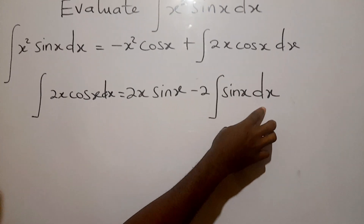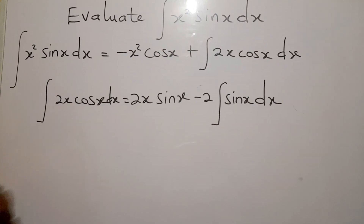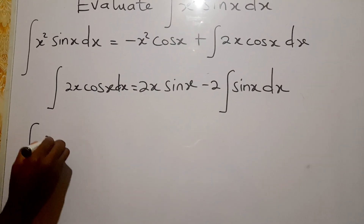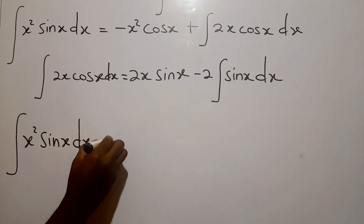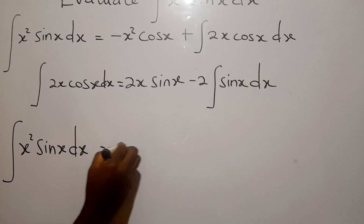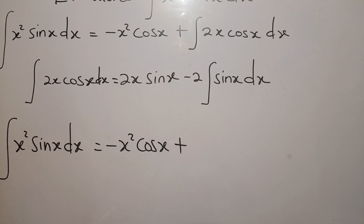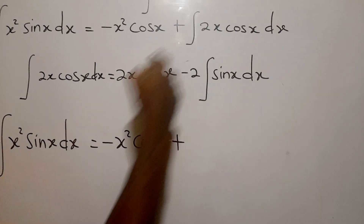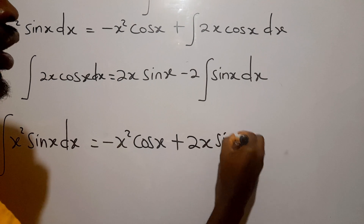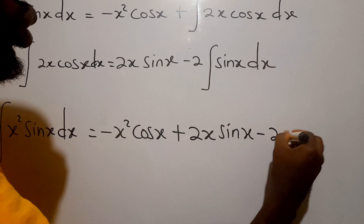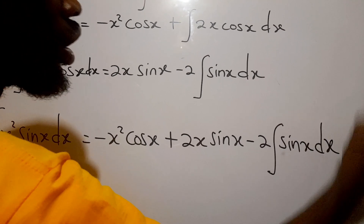Having found that the integral of 2x cos x dx equals 2x sine x minus 2 times the integral of sine x dx, we substitute this back into our earlier expression. So the integral of x squared sine x dx is equal to negative x squared cos x plus 2x sine x minus 2 times the integral of sine x dx.